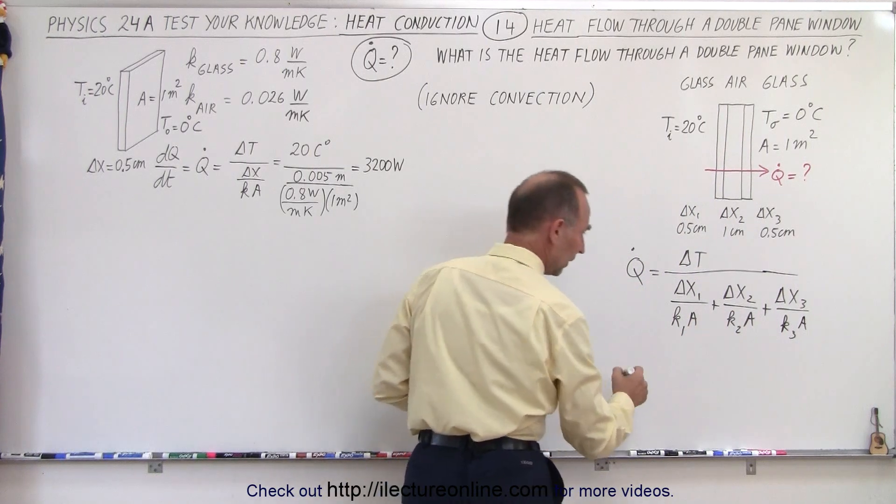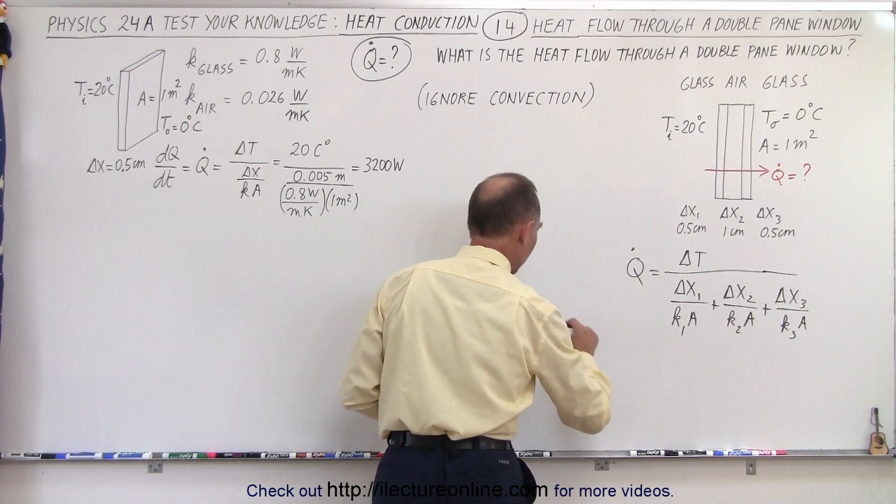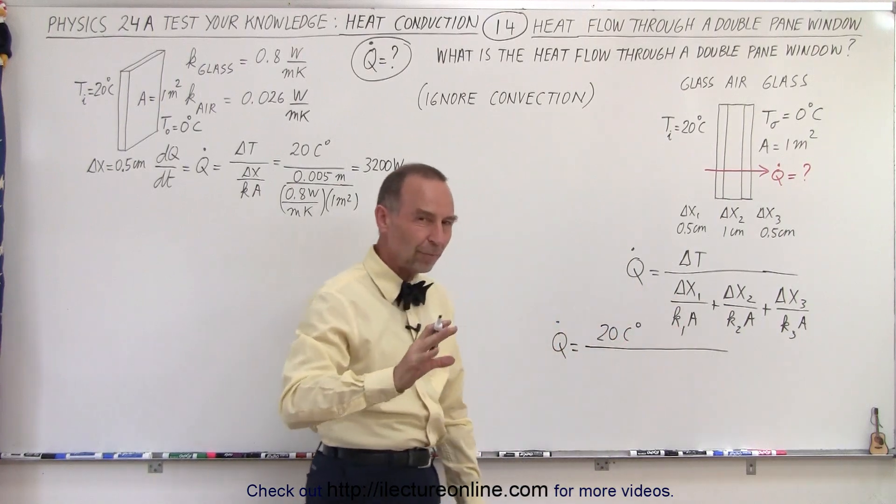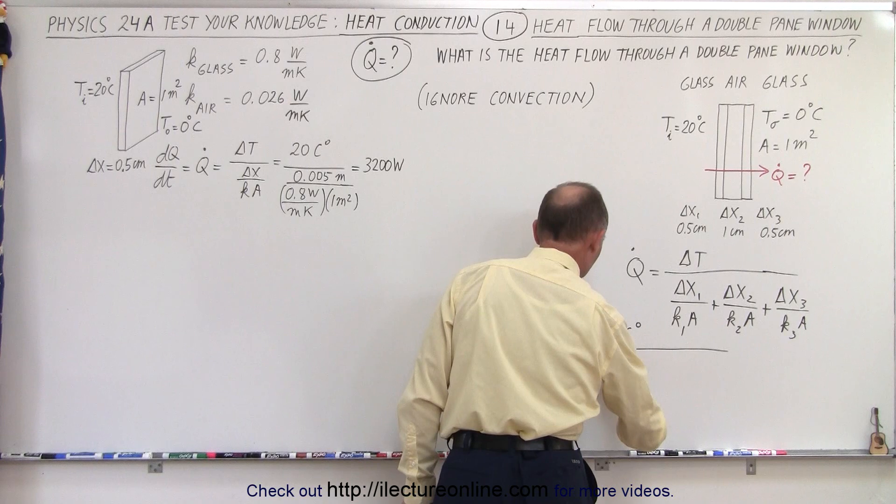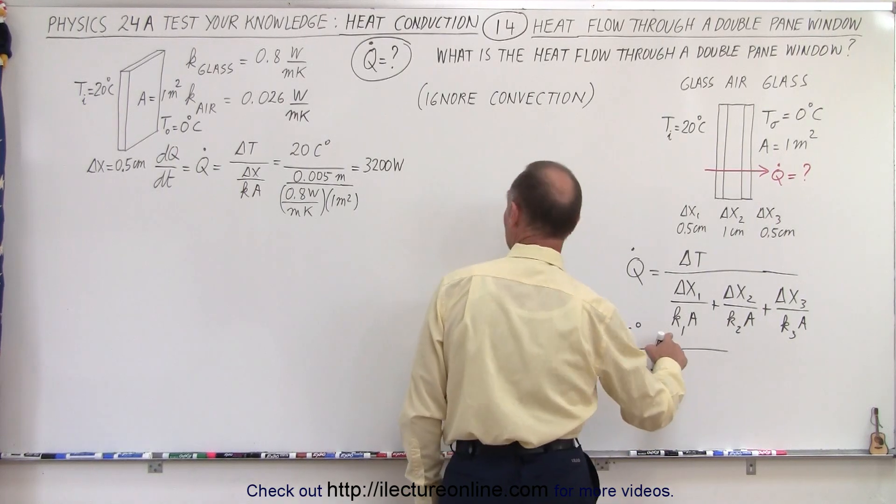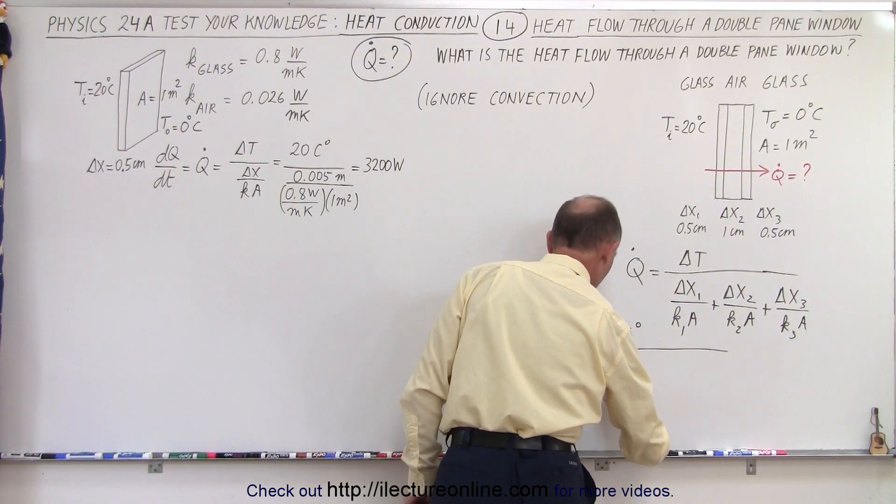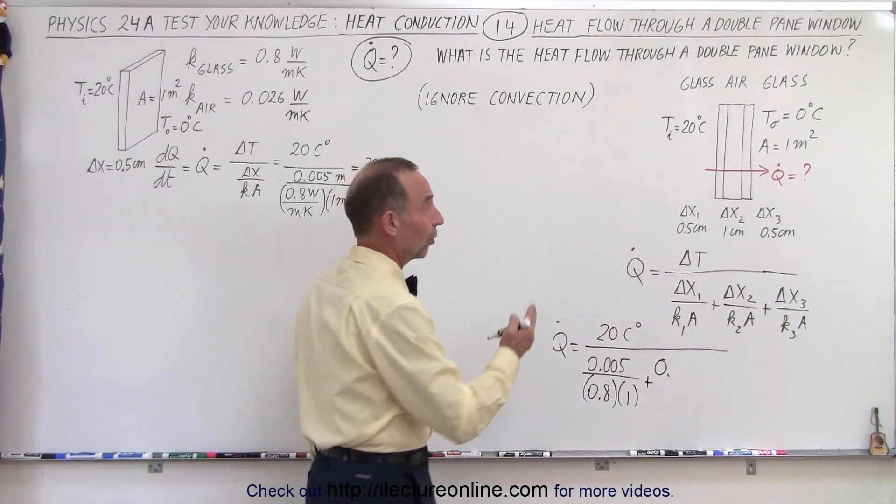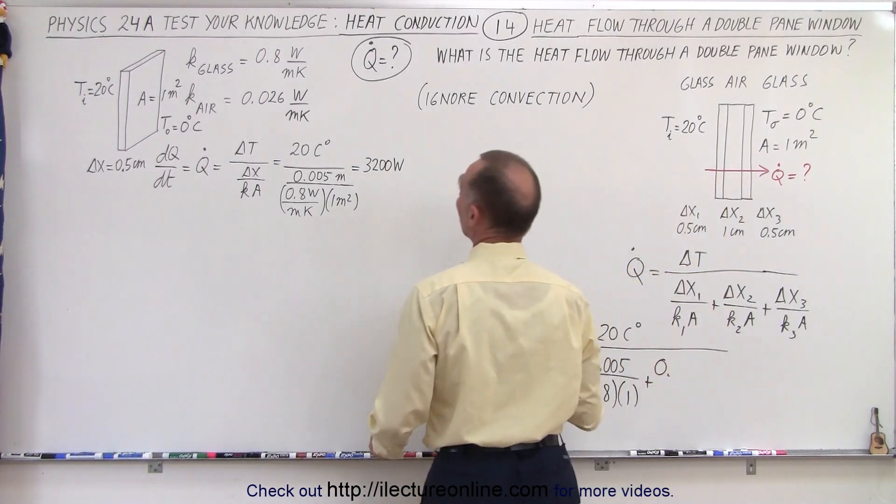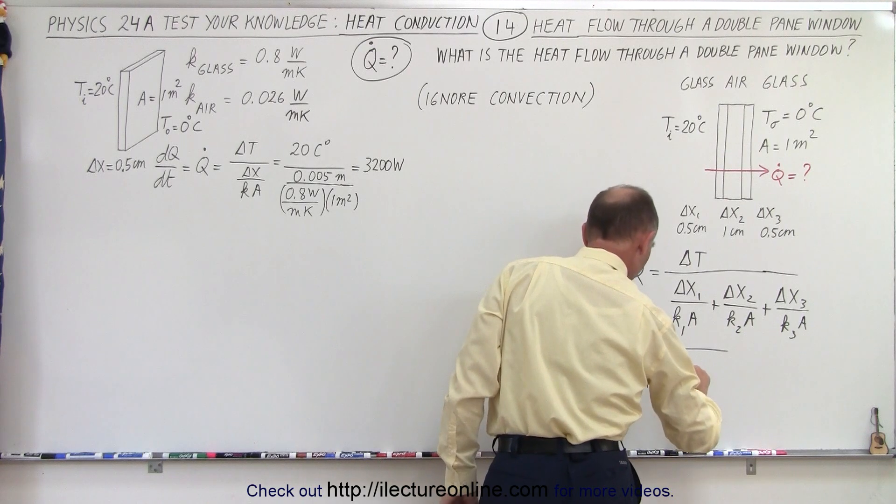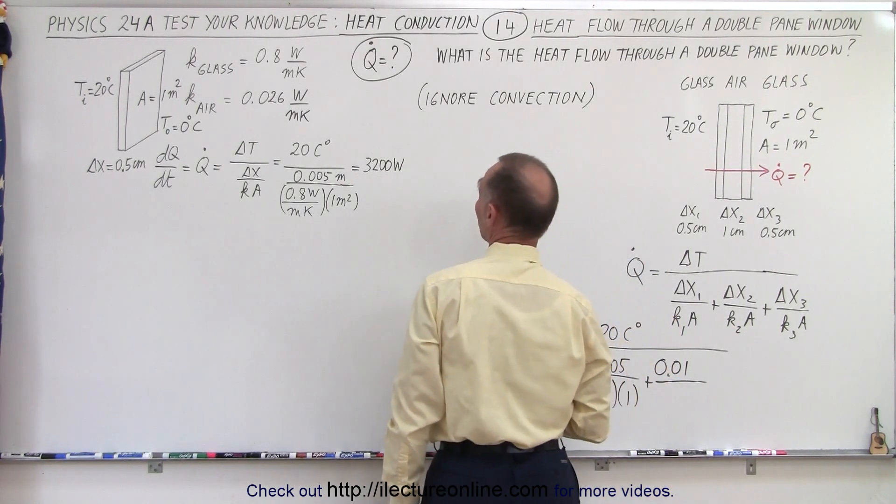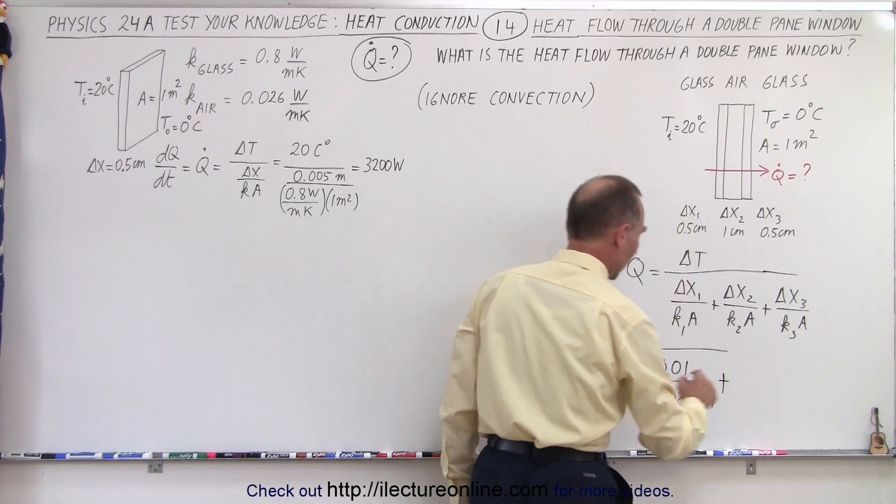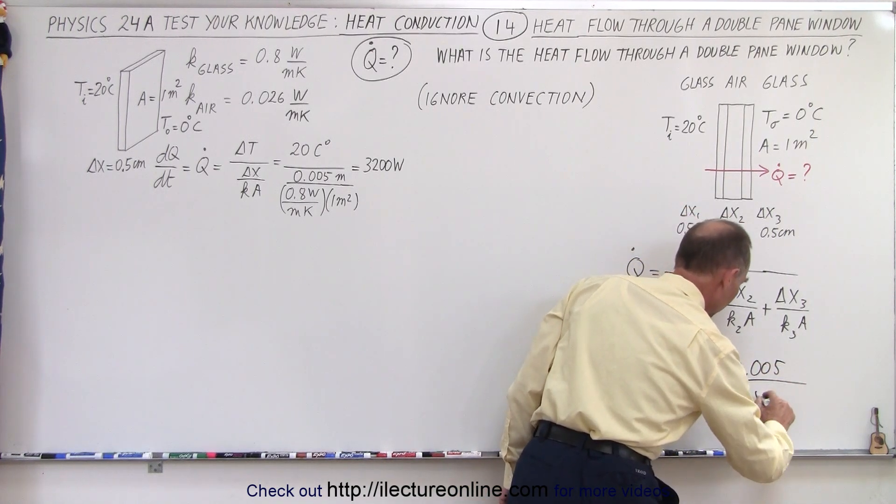I can do that right here. So we have Q̇ is equal to the difference in the temperature is 20 centigrade degrees, divided by delta X1. I'll leave out the units to make it a little bit cleaner. So delta X1 is going to be 0.005, divided by K1, which is the same K we have here. That's 0.8 times 1 for the cross-sectional area, plus, and notice that the heat conductivity of air, again, ignoring convection, so we're ignoring any air movement in between the two panes of glass. So we have K of 0.02, but first of all, we have the thickness, one centimeter converted to meters. We have 0.026, and one square meter for the area, plus, and then repeat for the second pane of glass, like so.